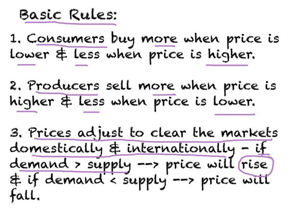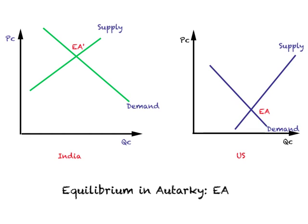The other possibility is if demand is less than supply — businesses face a surplus or inventory buildup. When this happens, prices fall. As prices fall, demand increases and supply falls, and this adjustment continues until equilibrium is reached where demand equals supply. Keep these basic rules in mind — they make it easy to understand the basic economic model of foreign trade under partial equilibrium analysis. Let us look at an example of clothing.